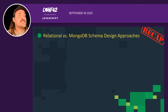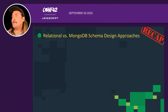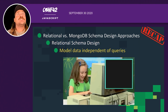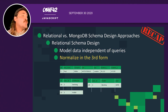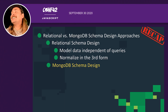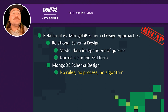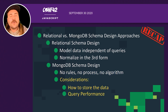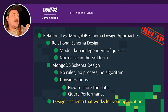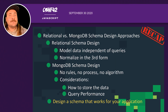Quick recap: relational schema design models data independently of queries through normalization, splitting data into separate tables with foreign keys and rows and columns. MongoDB schema design has no rules, no process, and no pre-prescribed algorithm. We're most concerned with how we're saving data and query performance. The most important thing to remember is you're designing your schema based on the needs of your application.